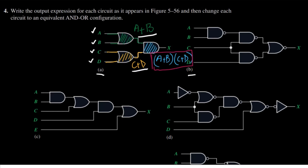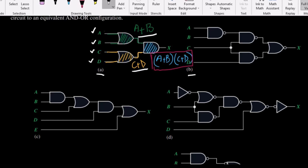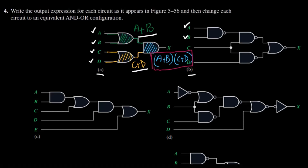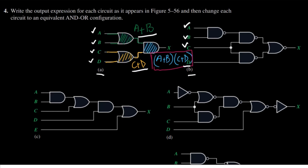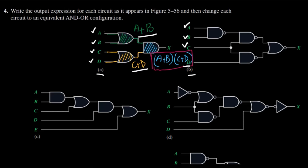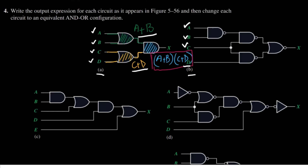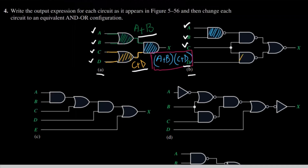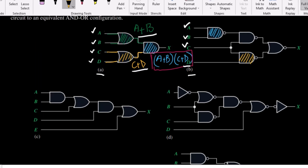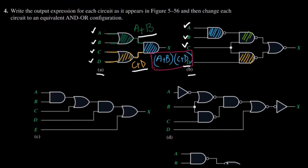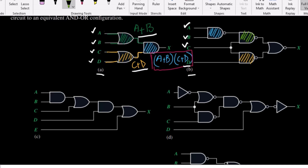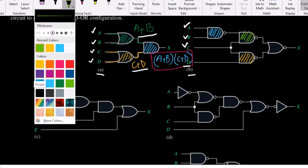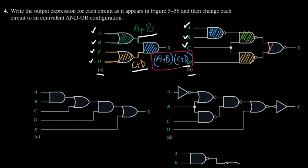Similarly, we have part B here with four inputs again: A, B, C and D. In order to denote different outputs of the gates, let me give each gate a color. The first AND gate gets light blue, the second gate gets yellow, the third gate gets light green, and the output OR gate gets orange color.